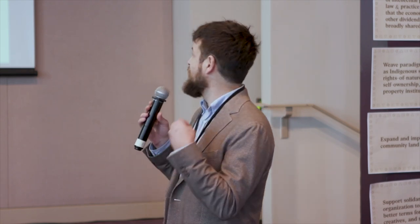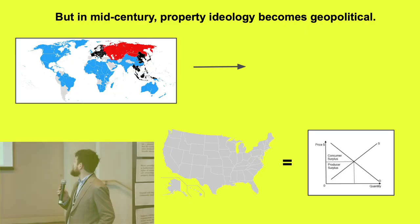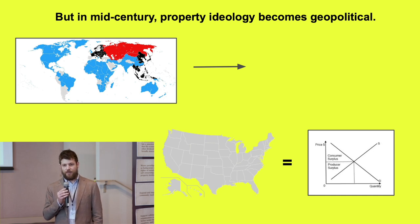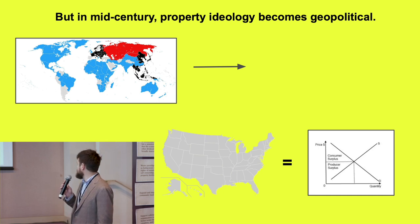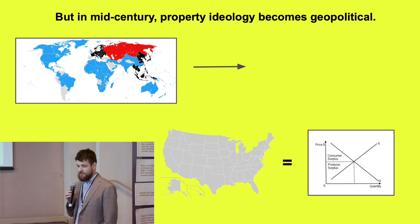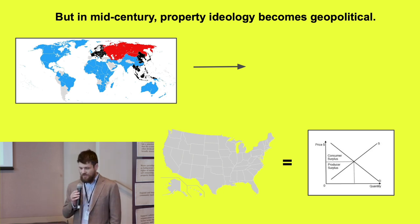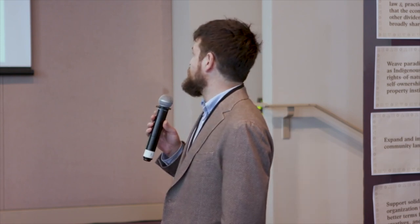Something interesting happened around the middle of the century: the way we think about property got consumed into a geopolitical struggle. Our ideologies around property became geopolitical. The neoclassical supply and demand framework, whatever its contradictions — which people were well aware of — had great ideological virtues in the context of that time. The United States was defining itself in opposition to fascism and communism, and that Alfred Marshall view of economics provided a way of organizing society that was clearly distinct from either. That collapsed the conversation into a post-war state ideology that has been with us for a long time.